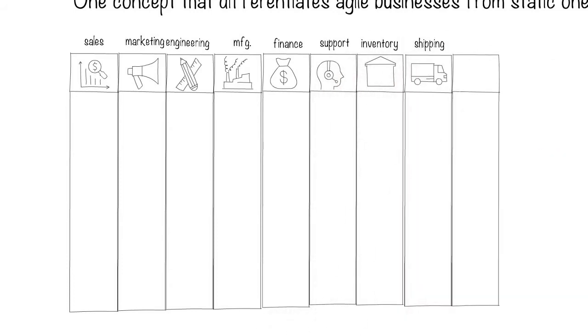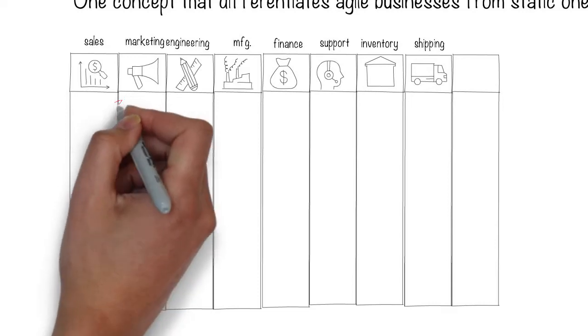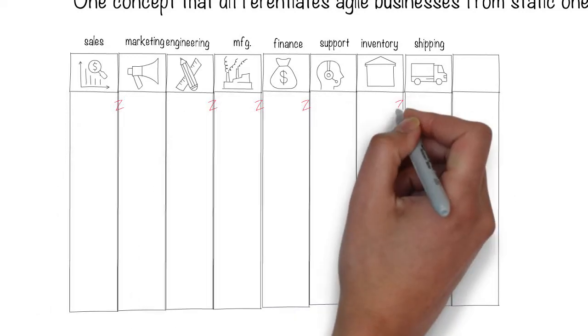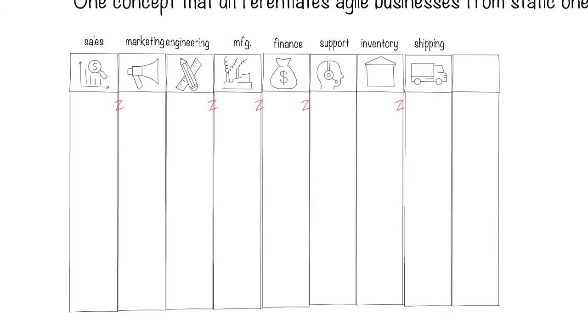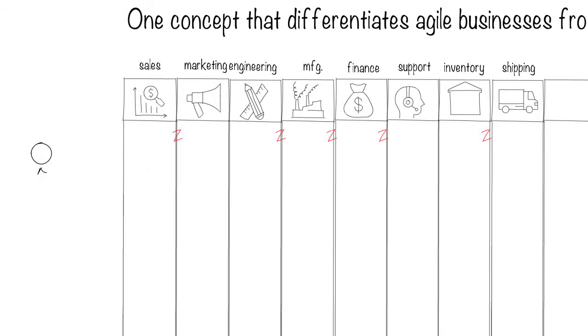We know that if these become siloed, it increases the friction in delivering the customer experience you desire. When a customer orders a product,